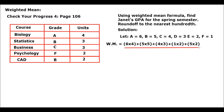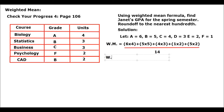The total number of units is 4 plus 3 equals 7, plus 3 equals 10, plus 2 plus 2 equals 14. So the denominator is 14.